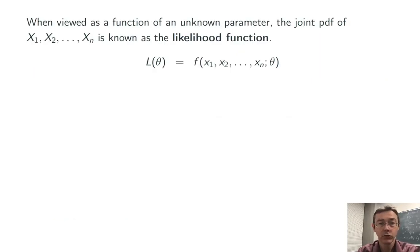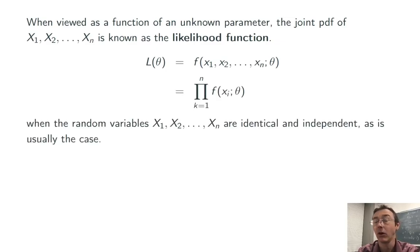When we take that joint PDF and view it as a function of theta, we usually use the notation capital L of theta and call the function the likelihood function. Really, it is just a joint PDF, but with a different perspective on it.